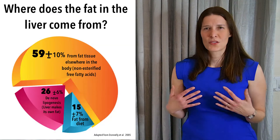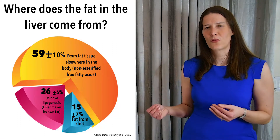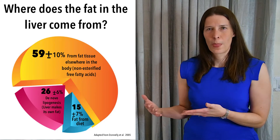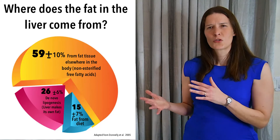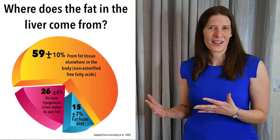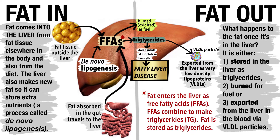Where does the fat in the liver come from? Most of it comes from the extra fat that can no longer be stored in the adipose tissue. About 25% is actually new fat that the liver creates from excess sugar in the diet, in a process called de novo lipogenesis. Interestingly, the smallest proportion comes from fats that are ingested in food.